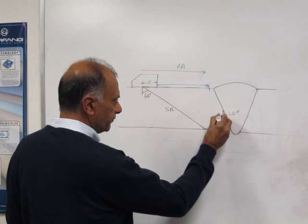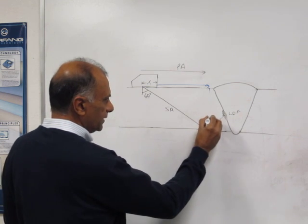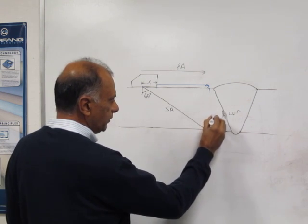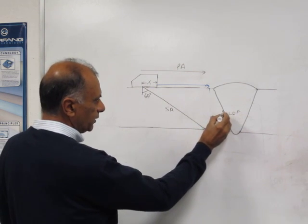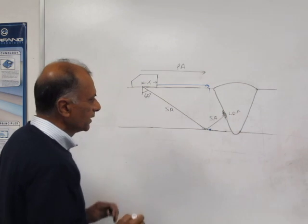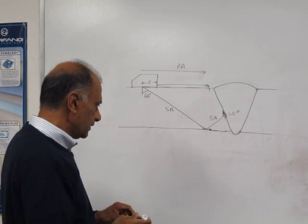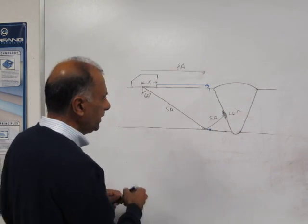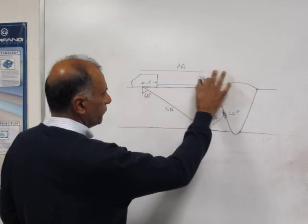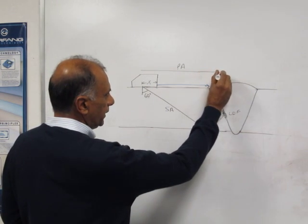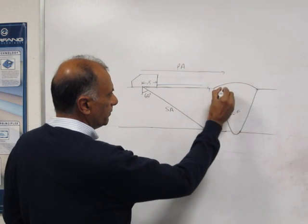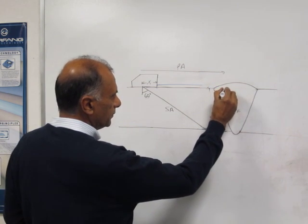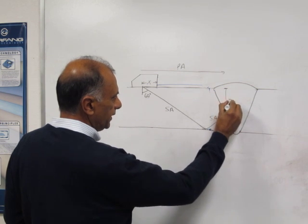In this case, the SA will be the total distance from here to the lack of fusion. The PA value will be up to the lack of fusion, which is going to be up to here, and the DA will be from this point down to the defect.